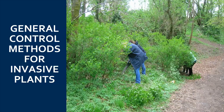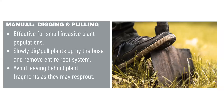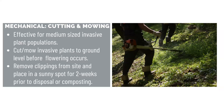During this next portion of the webinar, we're going to cover some general control methods for invasive plants. Invasive plants can be controlled manually, mechanically, chemically, and with biocontrol or natural predators. Manual control — such as digging and hand-pulling — is most effective on small invasive plant populations, best done in the spring when plants are smaller and soil is loose. It's important to remove the root system and avoid leaving behind any plant fragments or roots that may re-sprout. Mechanical methods such as mowing and cutting are effective for medium-sized populations. It's best to cut plants to ground level before flowering occurs, and mowing may need to occur multiple times throughout the growing season. To avoid re-sprouting, remove clippings from the site and solarize them — place them in a sunny spot for two weeks prior to disposal or composting.